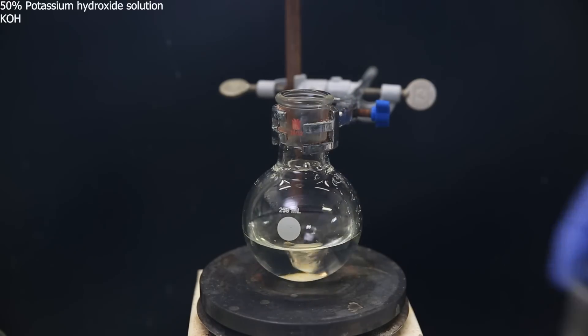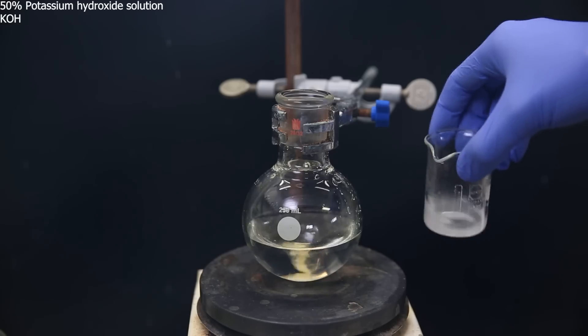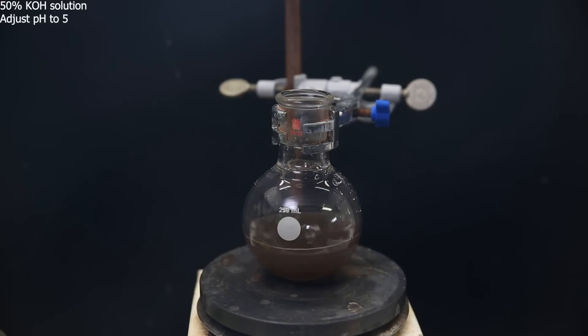When that happens, I prepare a 50% potassium hydroxide solution and use that to adjust the pH of the solution to about 5, to make sure that enough of the acid is deprotonated and that the nitrate ion fucks off to form potassium nitrate instead. So I dropwise add the potassium hydroxide solution to the flask and constantly check the pH to make sure I don't overshoot.